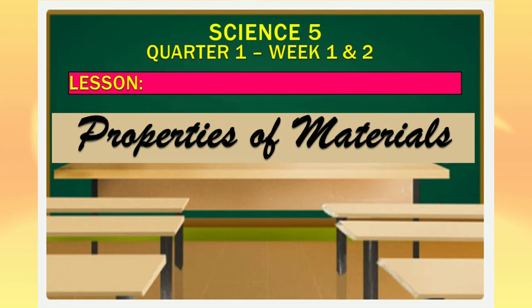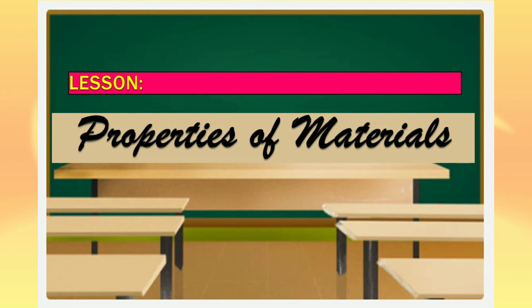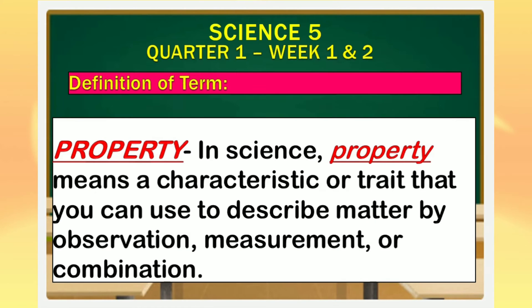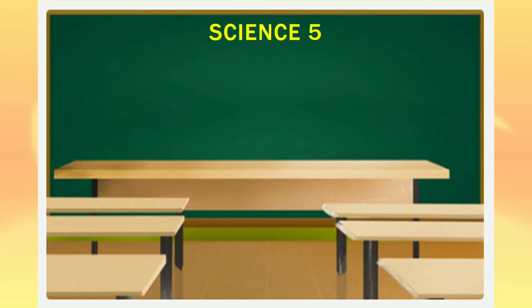Our lesson is about properties of materials. What is property? In science, property means a characteristic or trait that you can use to describe matter by observation, measurement, or combination.